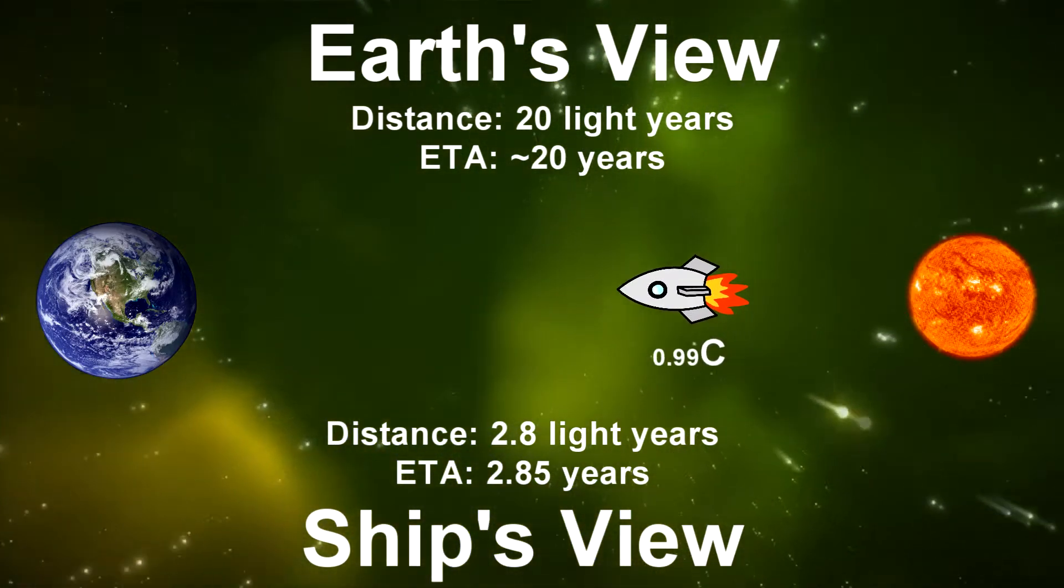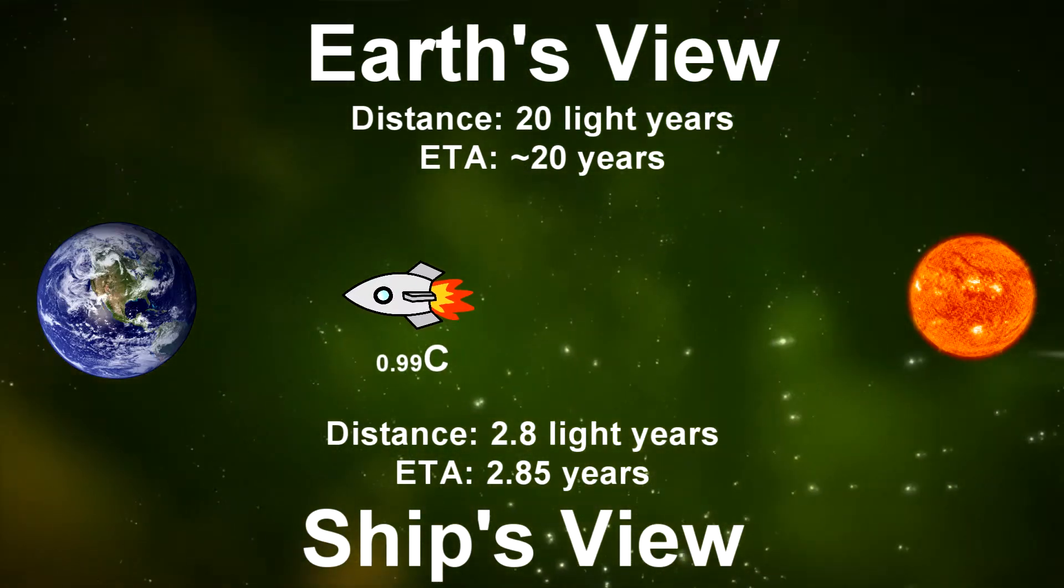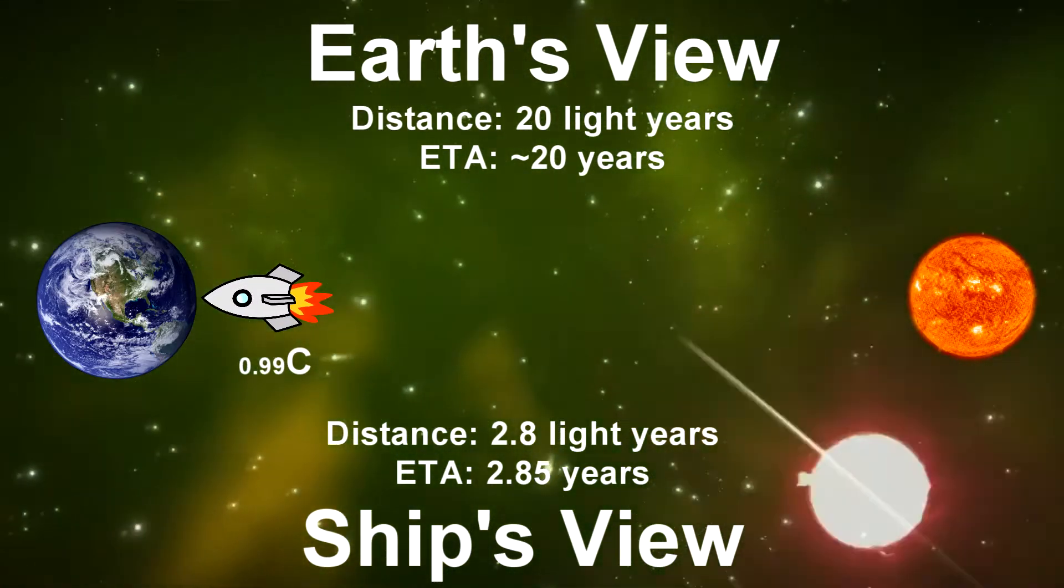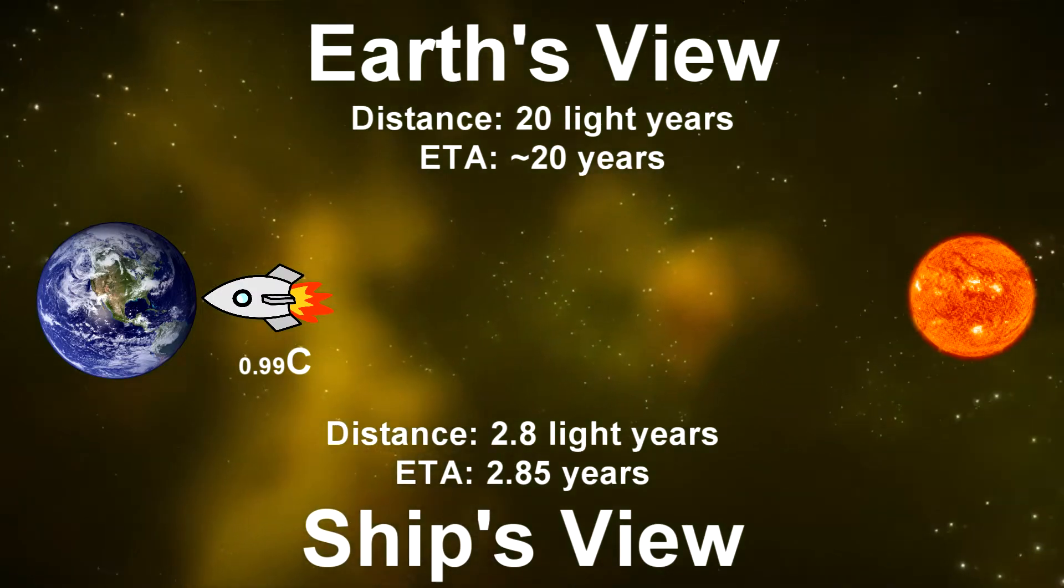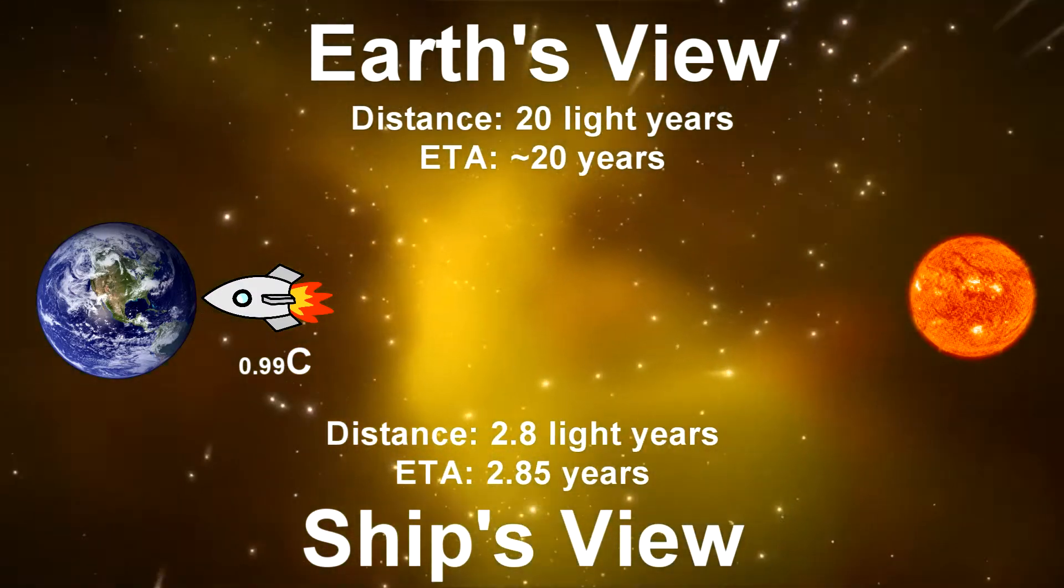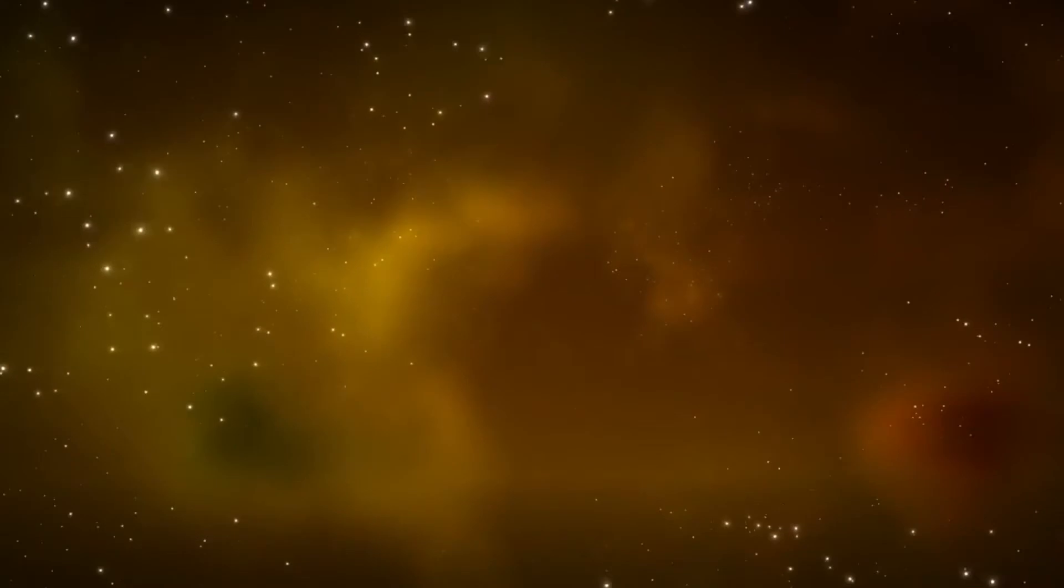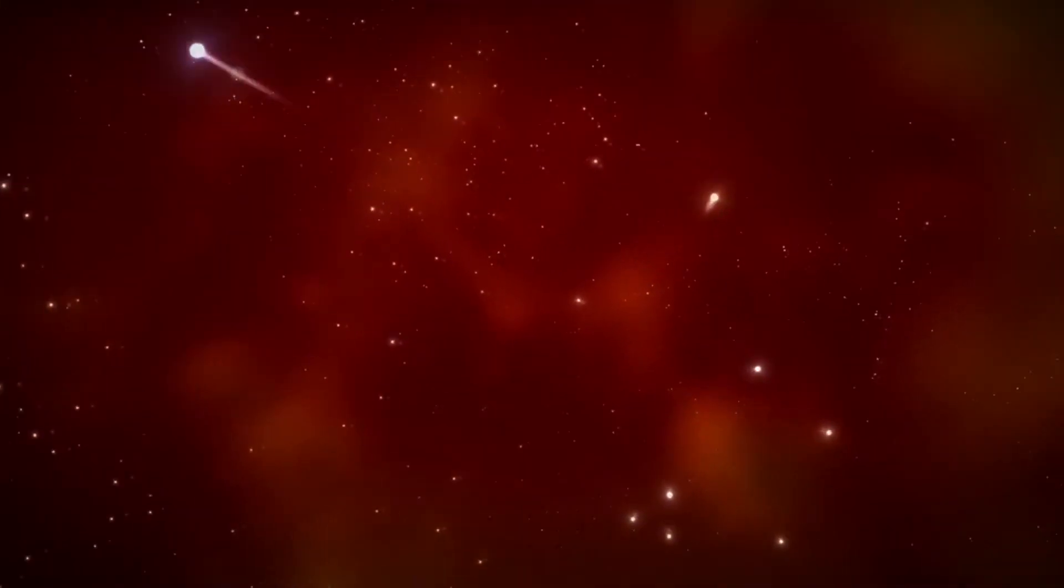And if you were to do a round trip once you get to the star, back to Earth at the same speed and to take you at the same time, you would arrive at Earth for what seems for you to be 5.7 years of your time, but for Earth or your friend on Earth, you would have traveled 40.4 years into the future.